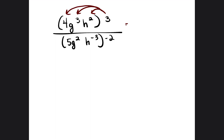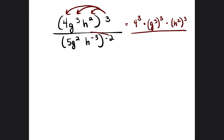On top, it's the same as saying 4 to the third power, g to the third power, h squared to the third power. On the bottom, we do the same thing with the negative 2: 5 to the negative 2 power, g squared to the negative 2, and h to the negative third power times negative 2.